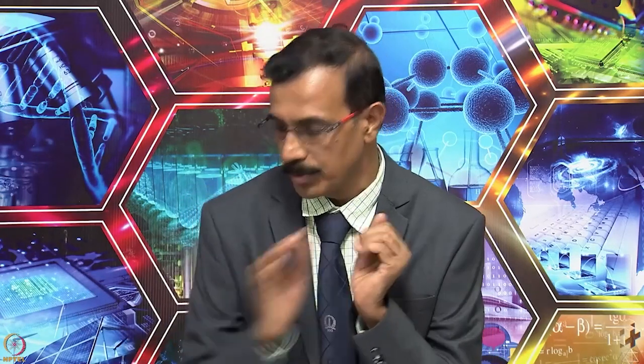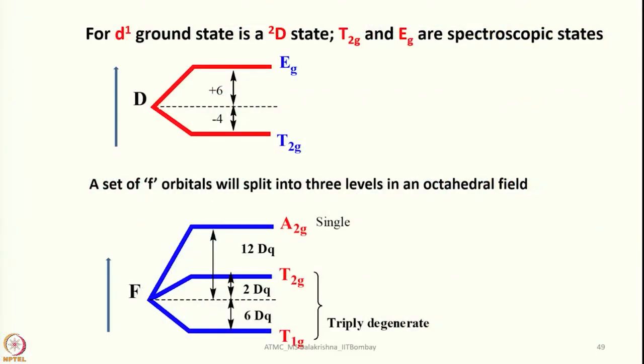I was telling you about different electronic configurations which are spin-allowed and Laporte-allowed, or spin-forbidden or Laporte-forbidden, with appropriate examples. Now let us look into individual electronic configurations to identify ground terms. For D1, the ground state is a 2D state, and T2G and EG are spectroscopic states for D.